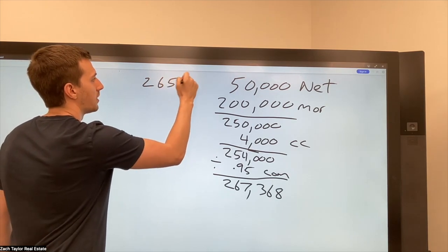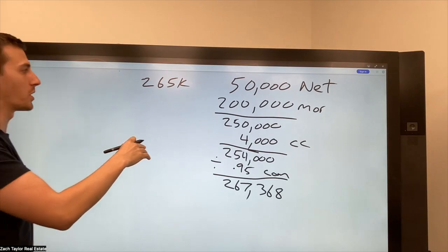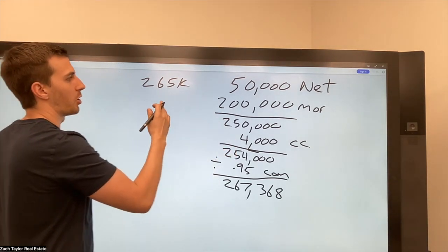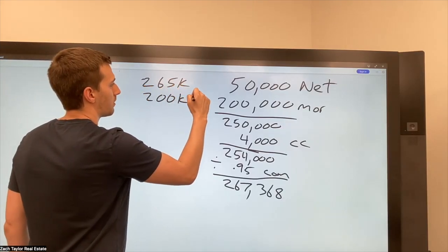So 265, let's say that's what I estimated. It could probably be listed for, and we'll get a purchase sale agreement for that. Now we just go backwards. So we minus the 200 from the mortgage.